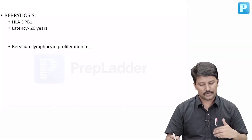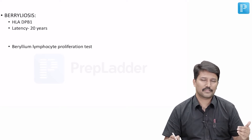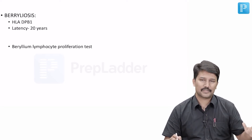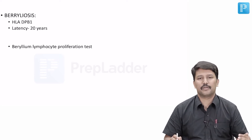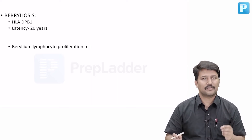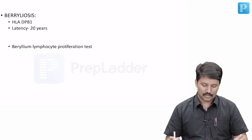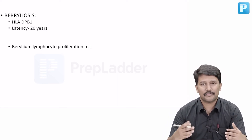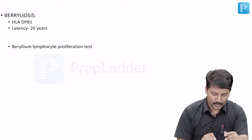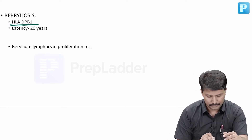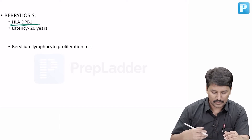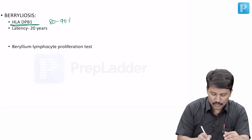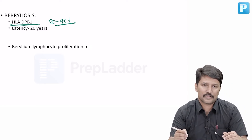Now coming to the next important occupational lung disorder — berylliosis. Berylliosis is also known to cause acute manifestation, but such cases are very minimal. Most berylliosis cases are because of chronic occupational lung disorder. One interesting point related to berylliosis is that they have a strong association with HLA-DPB1. You can see this HLA variant in 80 to 90 percent of the patients who develop chronic berylliosis.